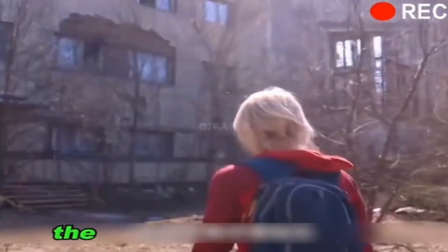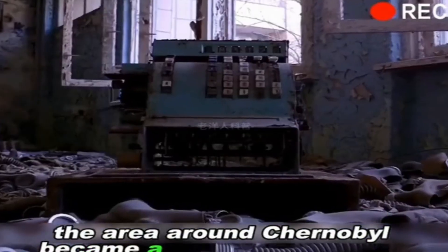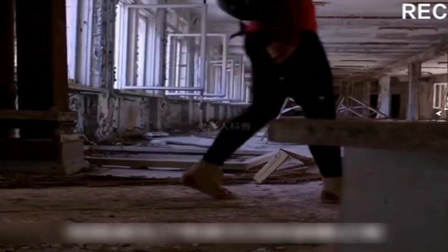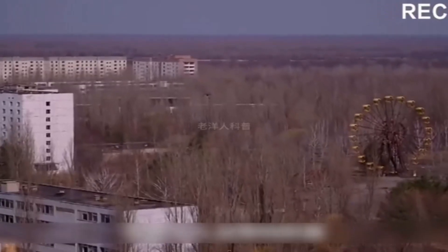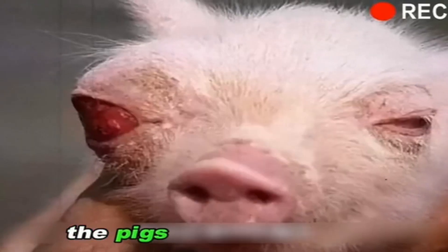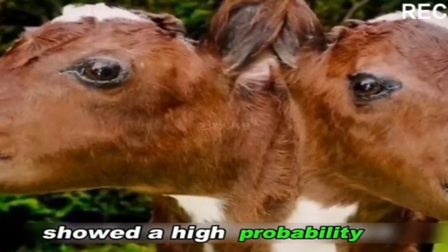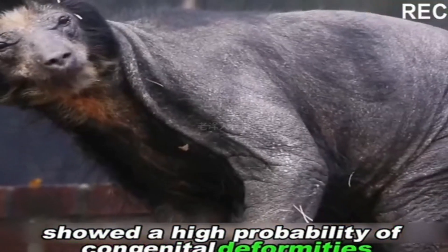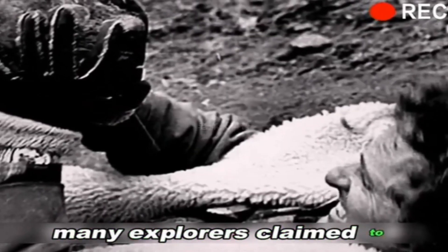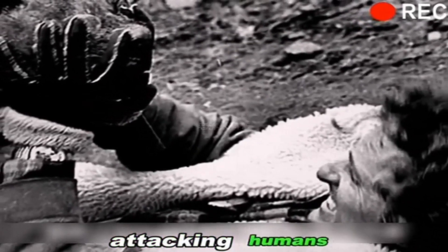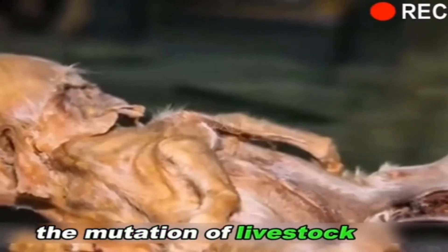After the outbreak, the area around Chernobyl became a silent city of death. But what was not expected? Within a few years of the disaster, the pigs and cows in the neighborhood showed a high probability of congenital deformities. Many explorers claimed to have seen giant rats attacking humans. The mutation of livestock was horrifying.